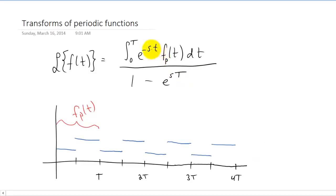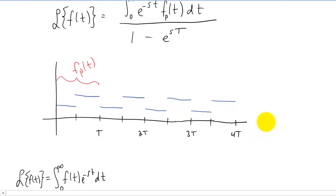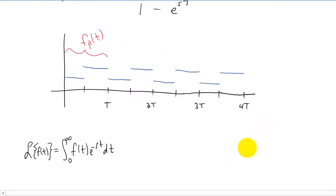What I want to do is give you an idea of where this formula comes from. So when we have a function and it's new to us and we don't know how to find a Laplace transform of it, what do we do? Hopefully by now you know the answer to that question is we use the definition of a Laplace transform.